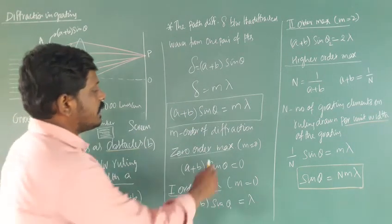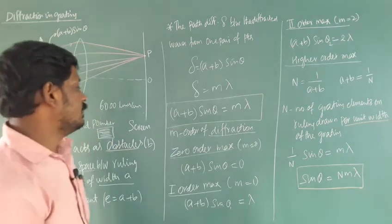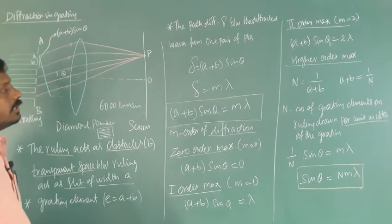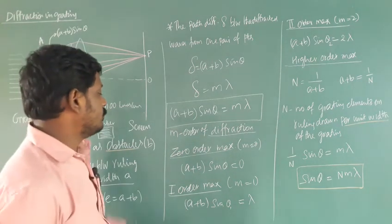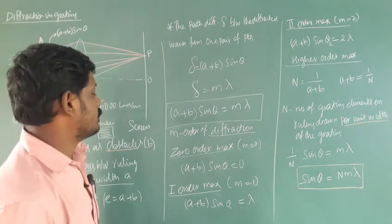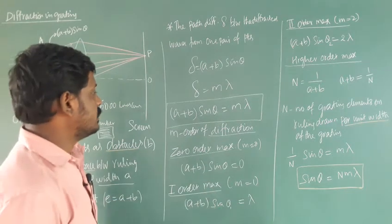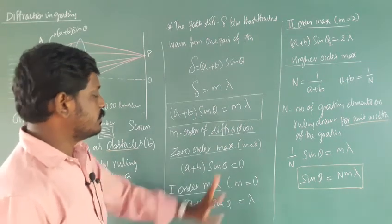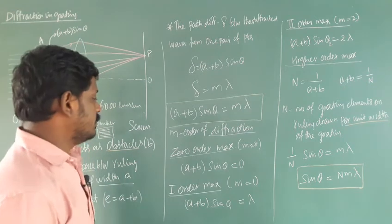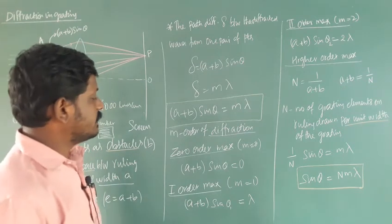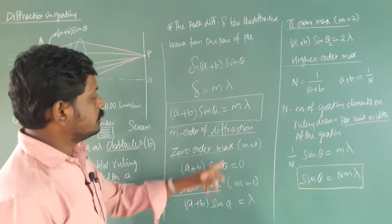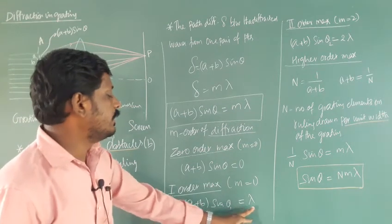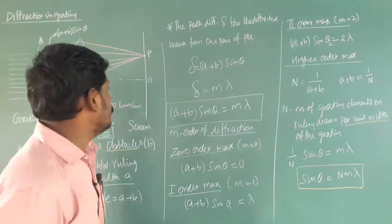The order of diffraction: the central maximum is the 0th order, which is the brightest. For 0th order maximum, substitute M equal to 0, giving (A plus B) sin theta equal to 0. For first order maximum, M equal to 1, giving (A plus B) sin theta₁ equal to lambda, where theta₁ is the first-order diffraction angle.